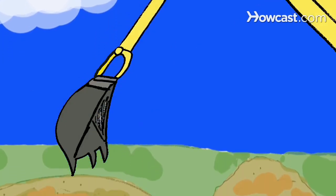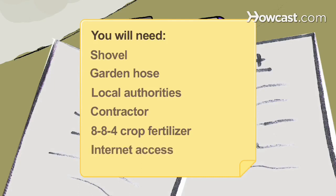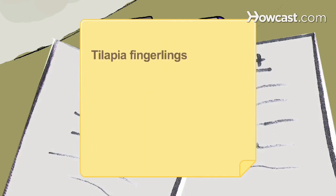Start small by building a fish pond. You will need a shovel, a garden hose, local authorities, a contractor, 884 crop fertilizer, a computer with internet access, tilapia fingerlings, a dip net, and fish food.